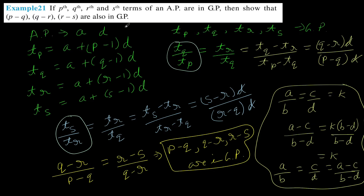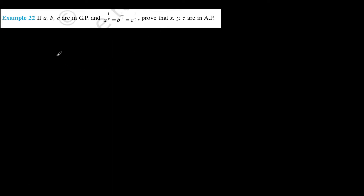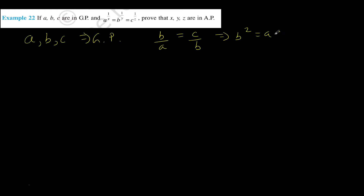These are questions where you need to follow the approach step by step and think slightly differently to reach the conclusion. Let's look at one more example. It says A, B, C are in GP, which implies B by A equals C by B, or B squared equals AC.